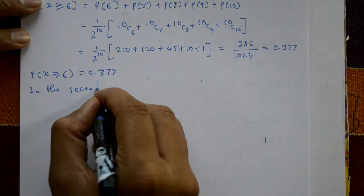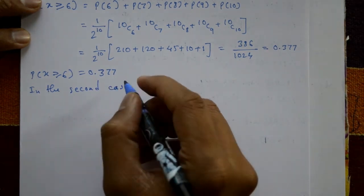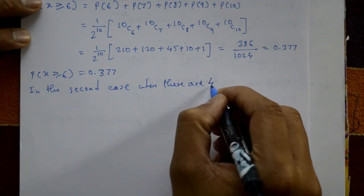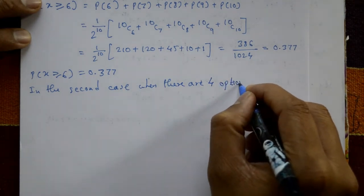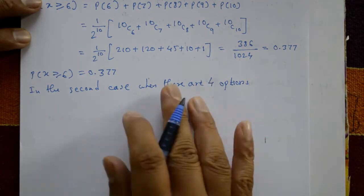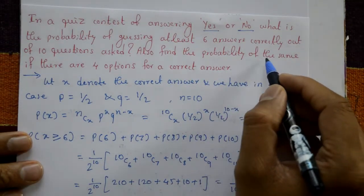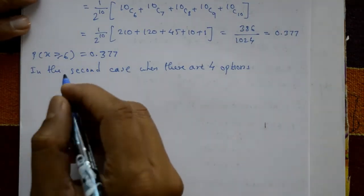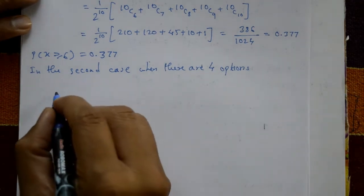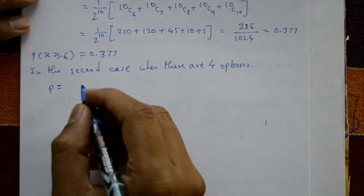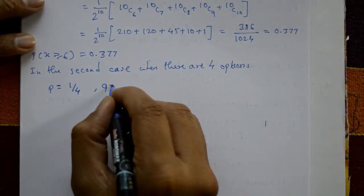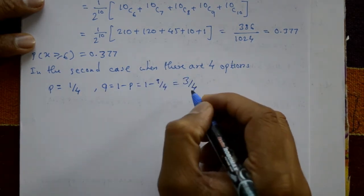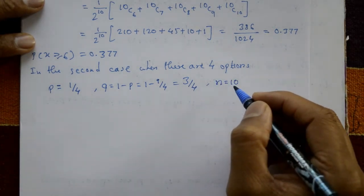In the second case, there are four options given for one question. Also find the probability of the same question when there are four options. One answer is correct out of four options, so P = 1/4, Q = 1 − 1/4 = 3/4. The total number of questions is ten, so N = 10.